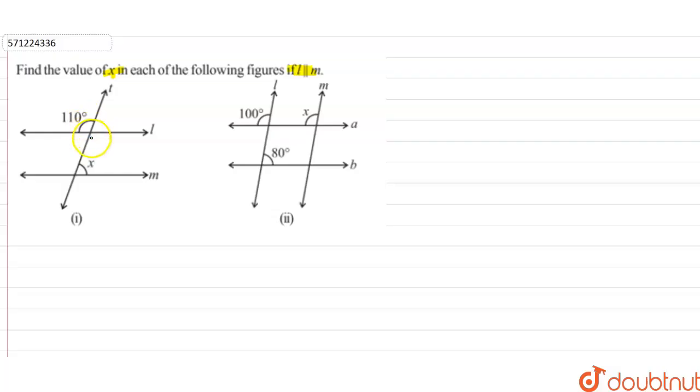Firstly, if you can observe figure 1, this is 110 degrees, and this is the vertically opposite angle of 110 degrees. So this angle will also be equal to 110 degrees, reason being vertically opposite angles.